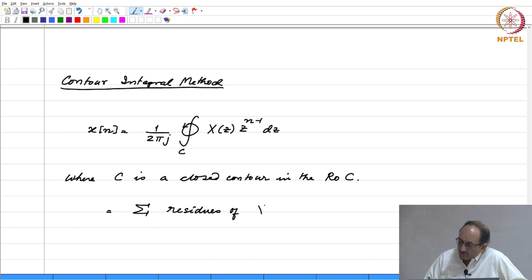Residues of X(z) times z to the n minus 1 evaluated at the poles encircled by C.